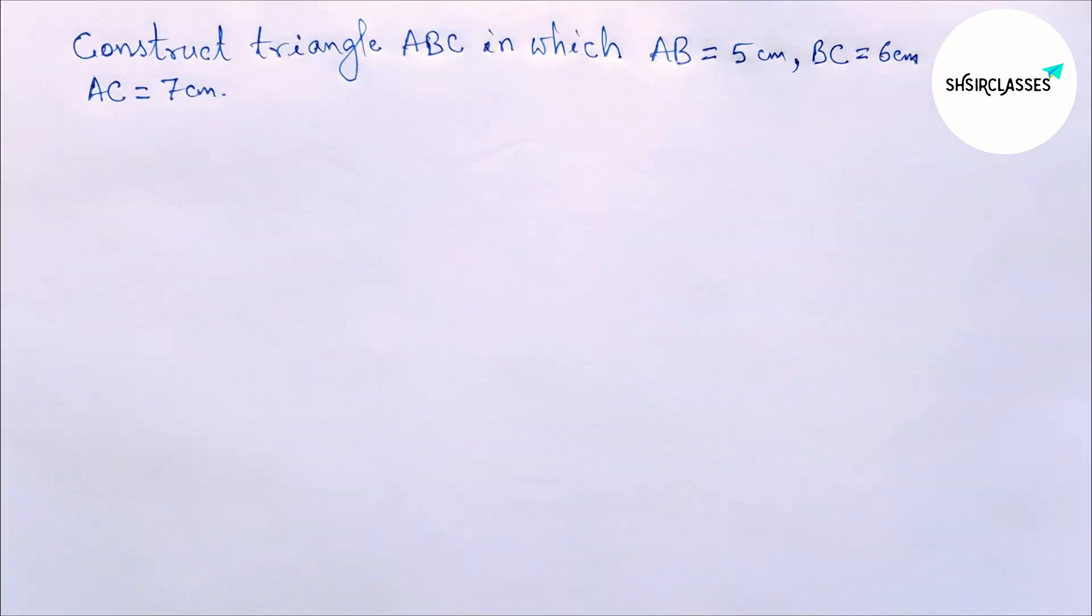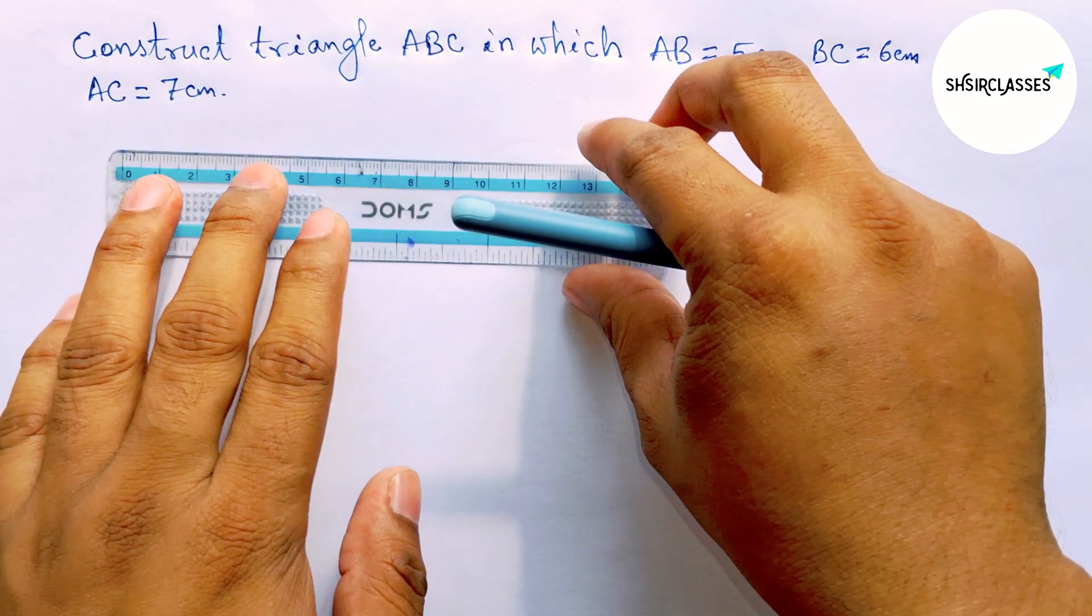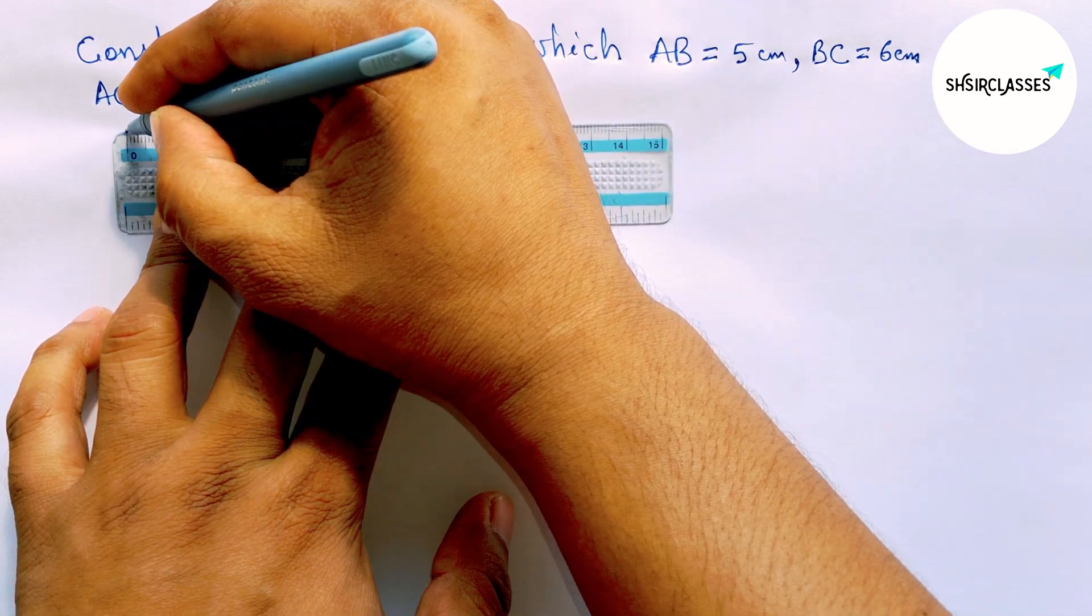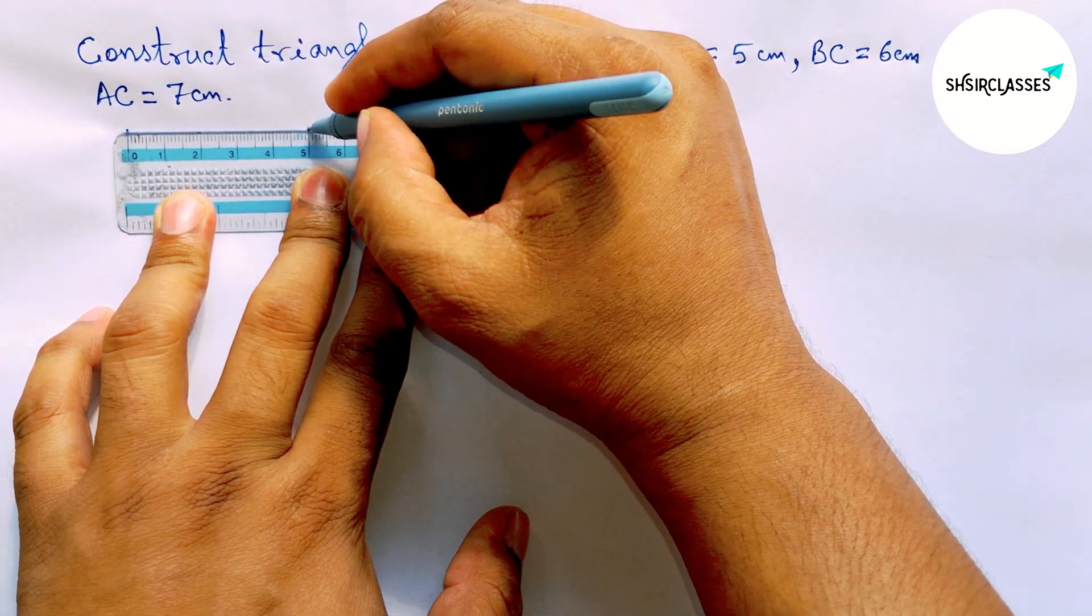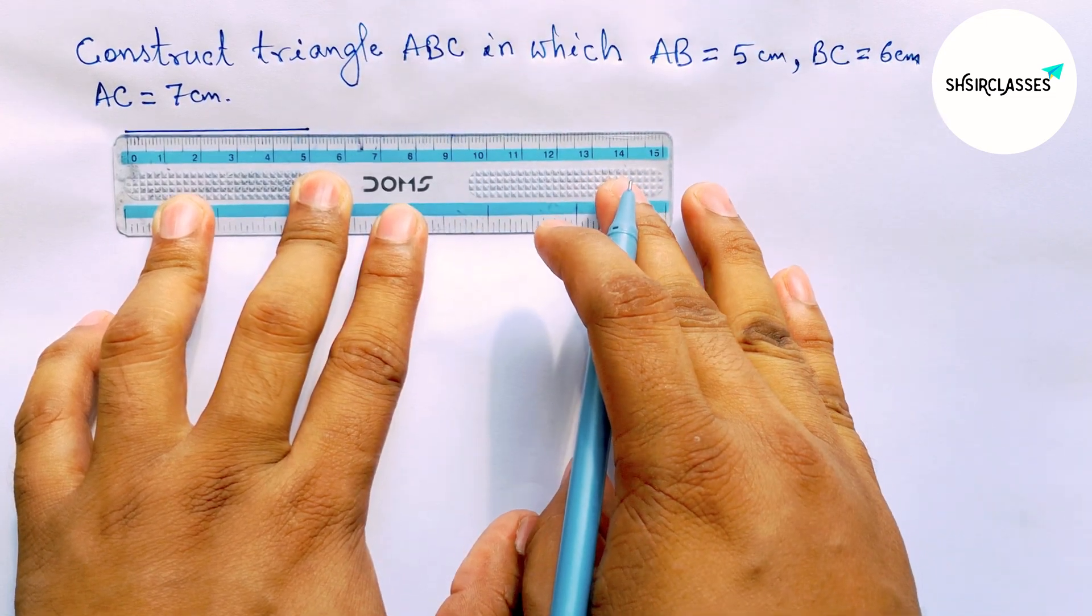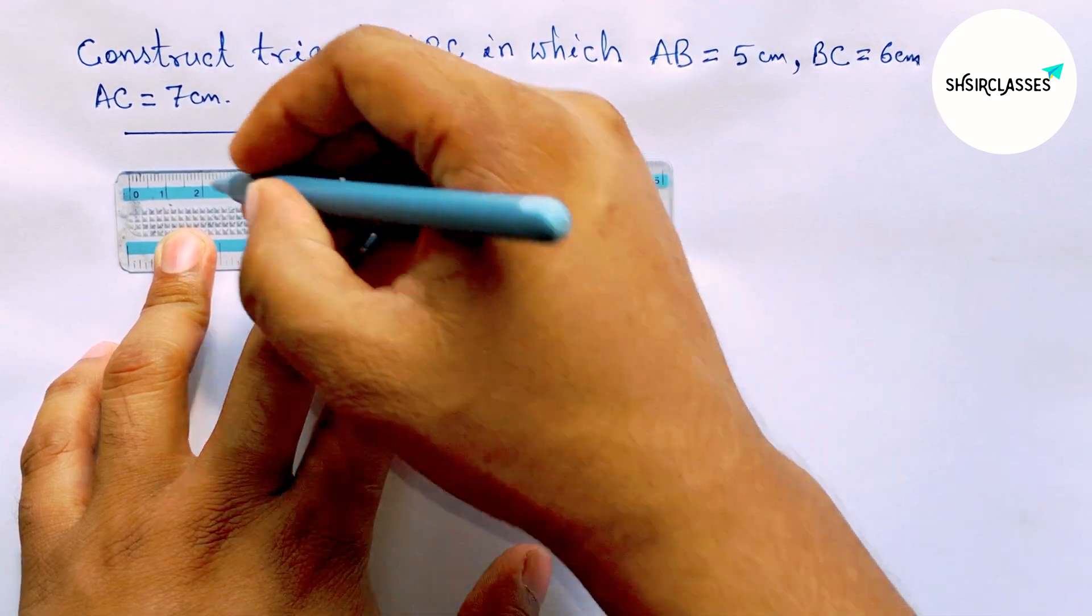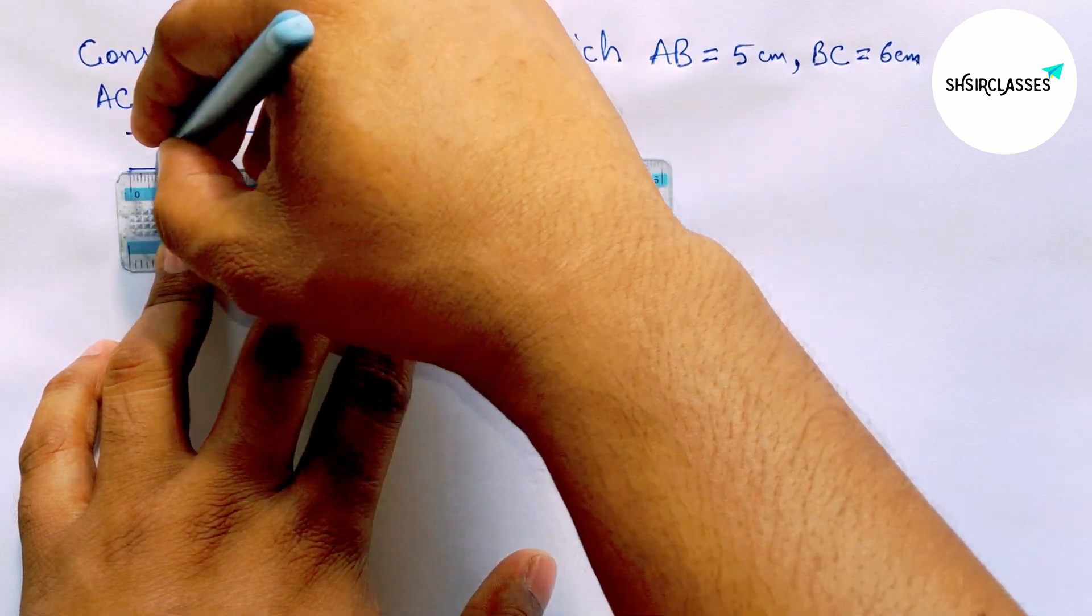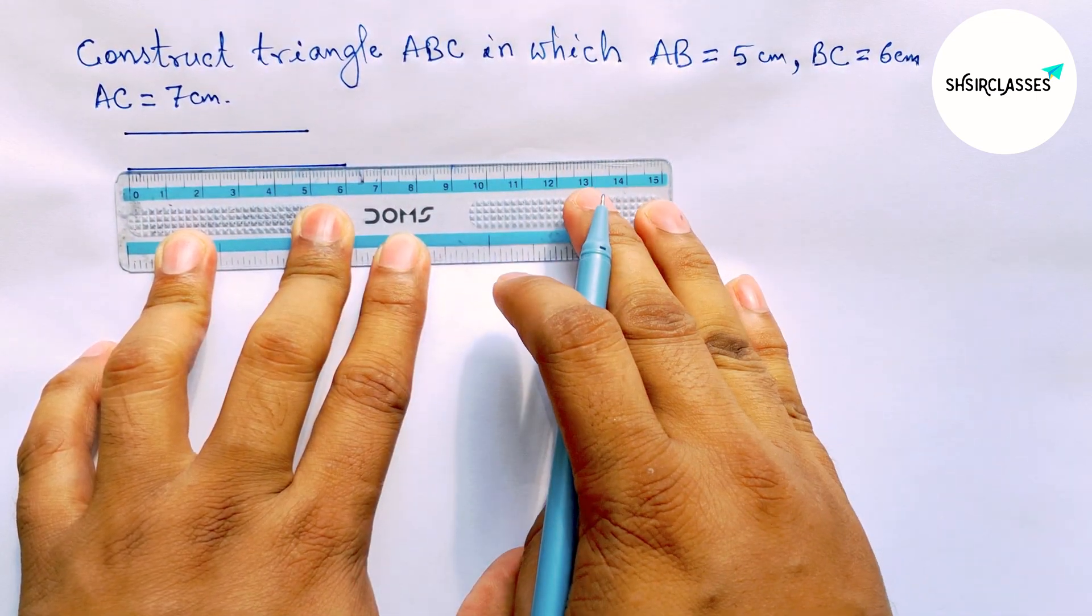So let's start the video. First of all, let us draw here the given three sides. So first drawing a line segment of length 5 centimeters, then drawing a 6 centimeter line segment. So this is a 6 centimeter line segment.